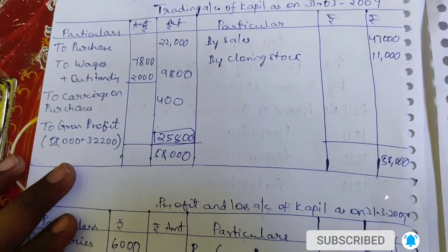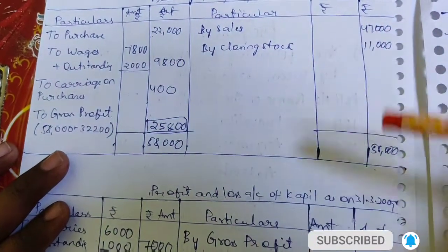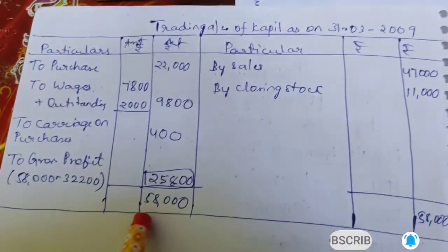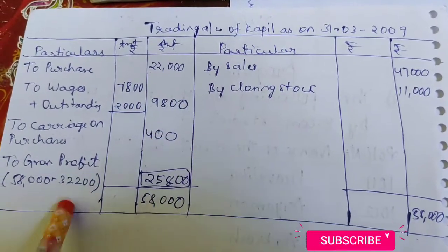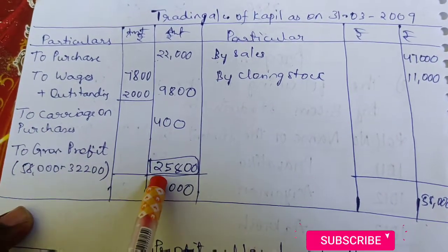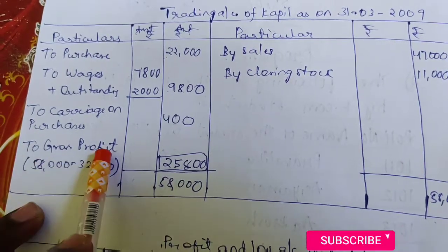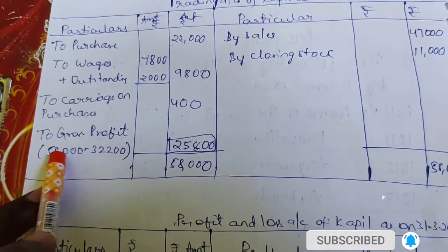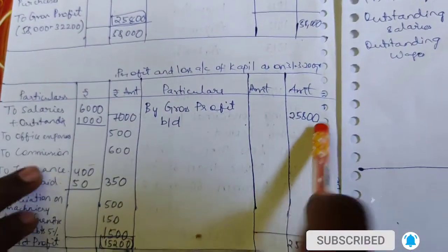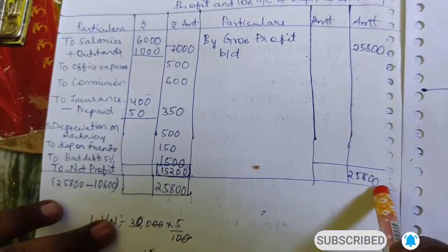All entries including adjustments are complete. Now we balance. The total comes to 58,000. The other side totals 32,200. The balancing figure on the debit side is 25,800 — this is the gross profit. If the credit side is higher, it's gross loss. Gross profit 25,800 is transferred to the P&L account. P&L total is 25,800 on both sides.